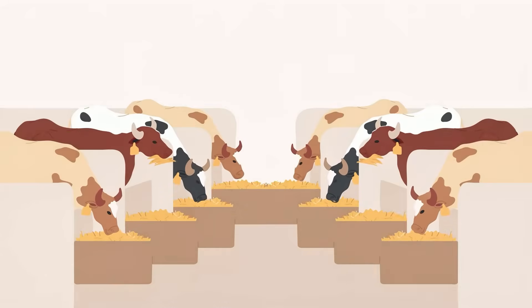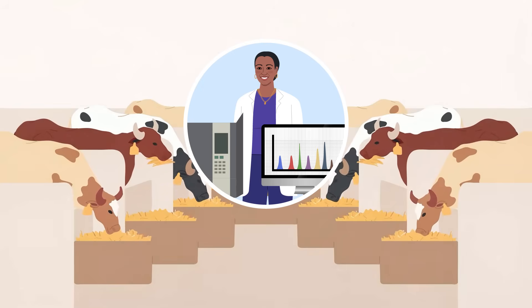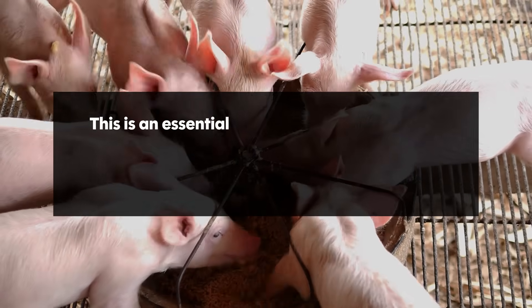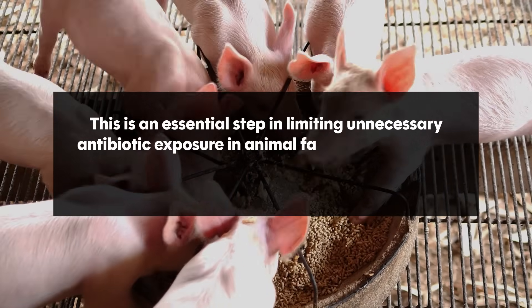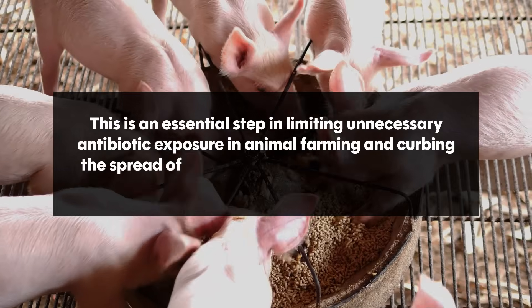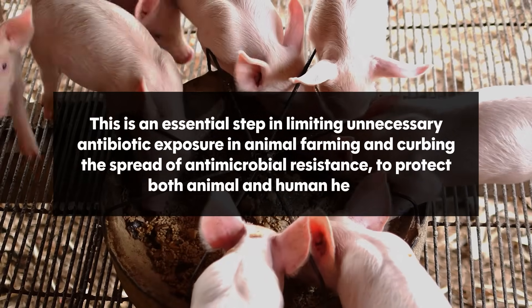By providing a reliable way to detect trace antibiotic residues in feed, the JRC's method strengthens our ability to enforce EU regulations. This is an essential step in limiting unnecessary antibiotic exposure in animal farming and curbing the spread of antimicrobial resistance to protect both animal and human health.